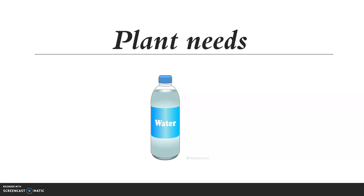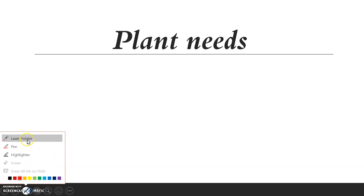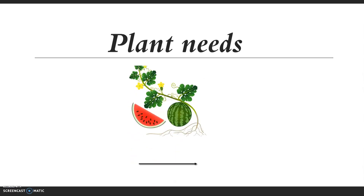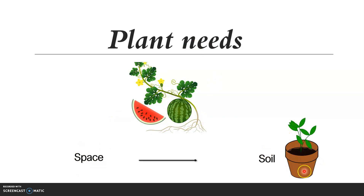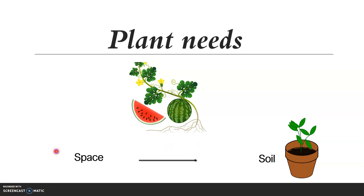Also, one of the plant needs is space. Plants need space to grow. If there is no space for a plant, how will it grow? Plants need to grow in space in the soil. Different plants need different amounts of space — for example, a watermelon needs more space than a smaller plant to grow.